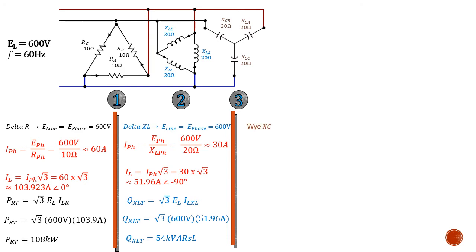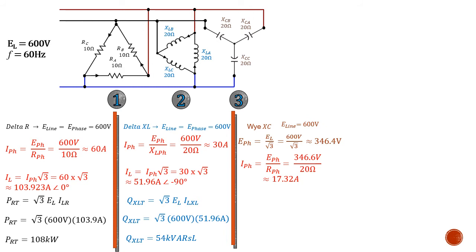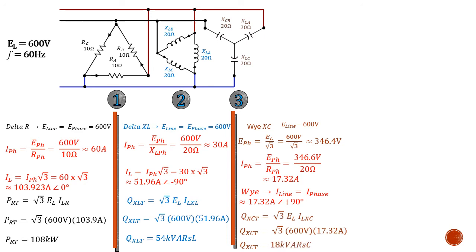Moving on to our third section: the Y-connected capacitance. We have 600 volts line voltage, but since it's a Y, we compensate for the phase voltage. 600 divided by root 3 gives us approximately 346.4 volts per phase across each capacitive component. That works out to about 17.32 amps per phase in our capacitive circuit. Since it's a Y, line currents and phase currents are the same, so we have 17.32 amps capacitive, which means it leads by 90 degrees. With those values in hand, we calculate our capacitive reactive power, which comes out to be about 18 kVArs.